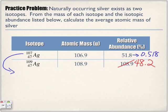So we have 0.518 and we're going to multiply it by 106.9 because we want to find out what percent of all the silvers are of this atomic mass. Then we're going to find 48.2 percent for the other isotope.